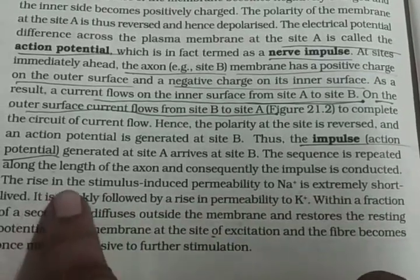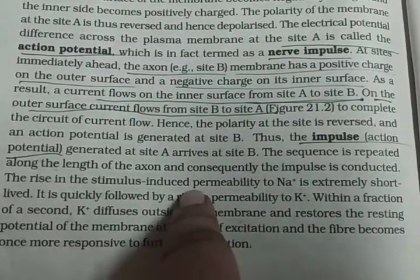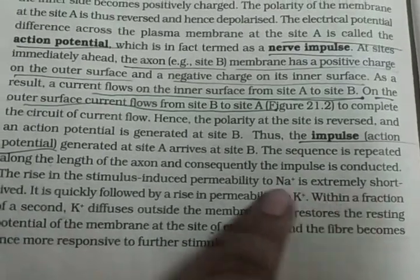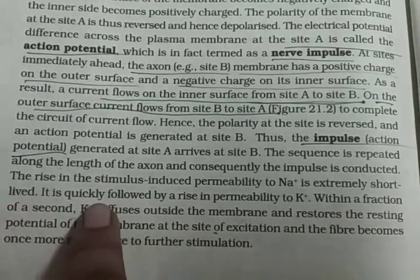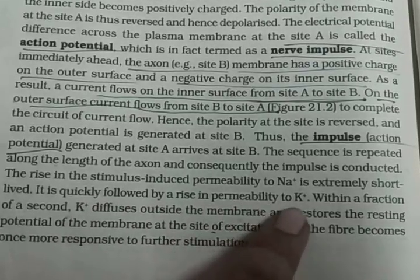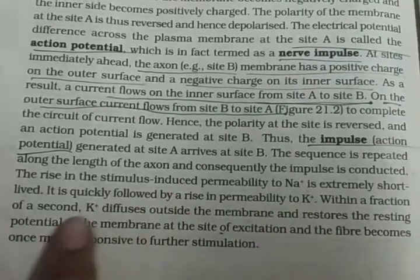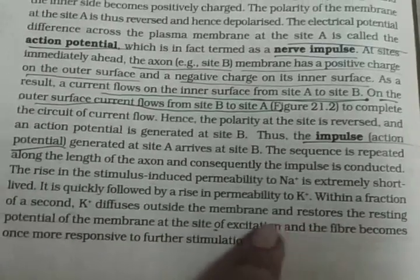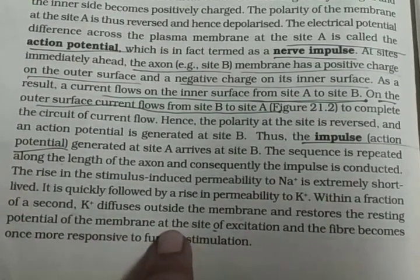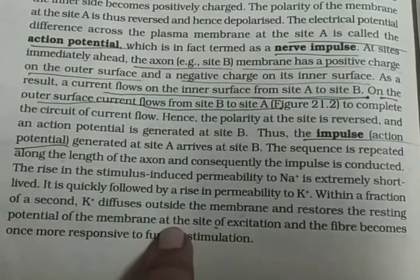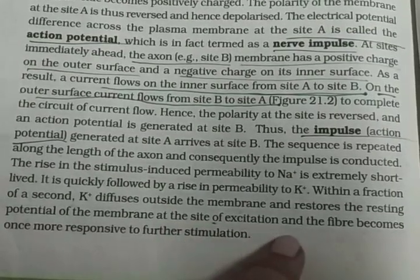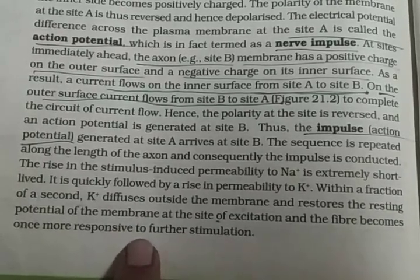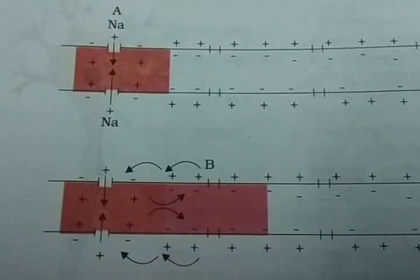The rise in stimulus-induced permeability to Na+ is extremely short-lived. It is quickly followed by a rise in permeability to K+, within a fraction of a second. K+ diffuses outside the membrane and restores the resting potential of the membrane at the site of excitation. The fiber then becomes more responsive to further stimulation.